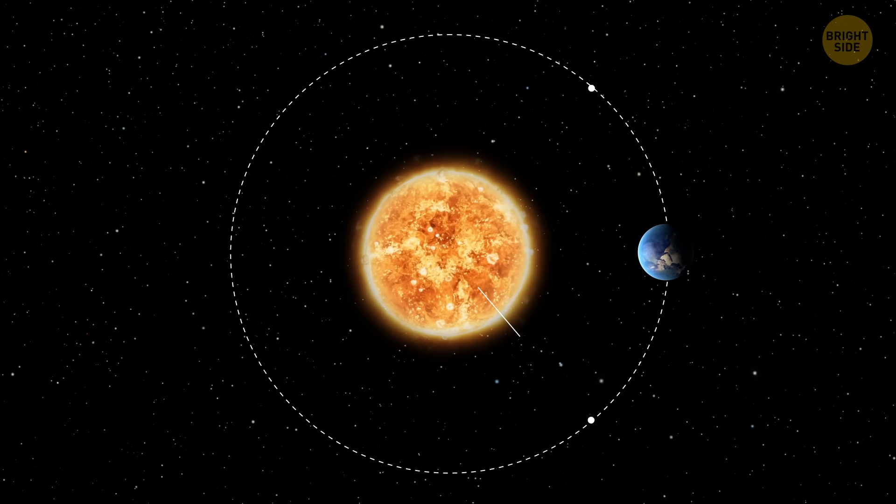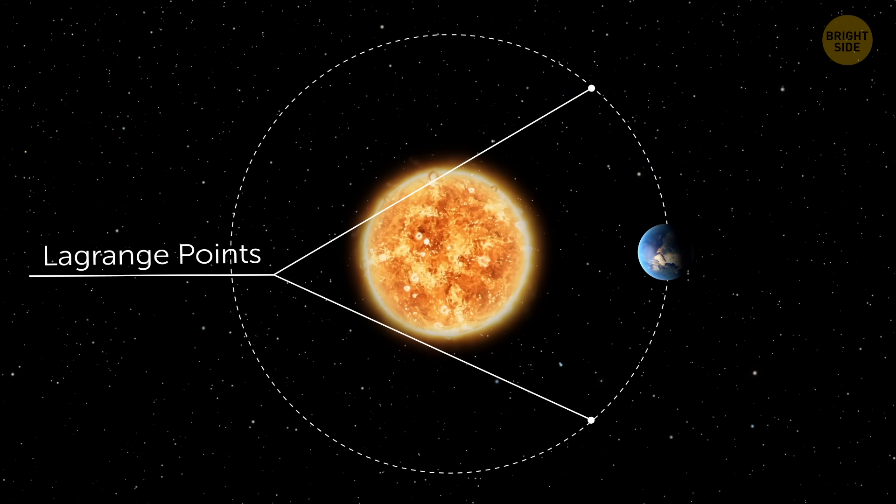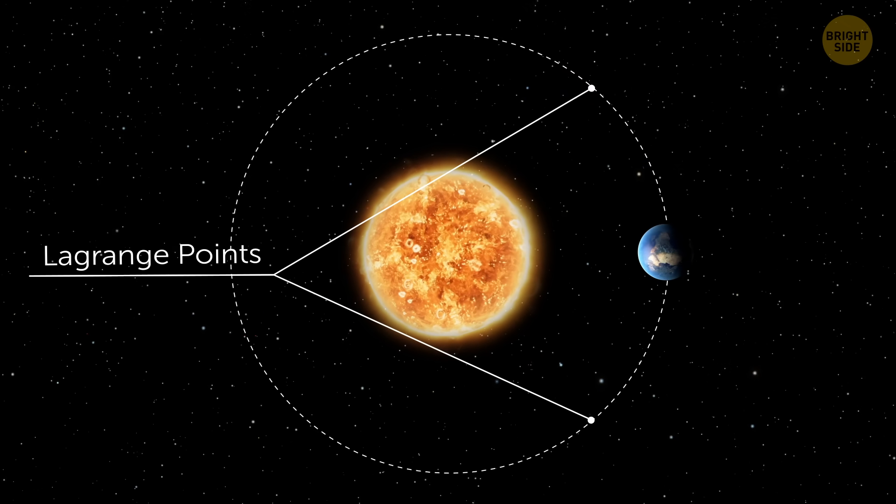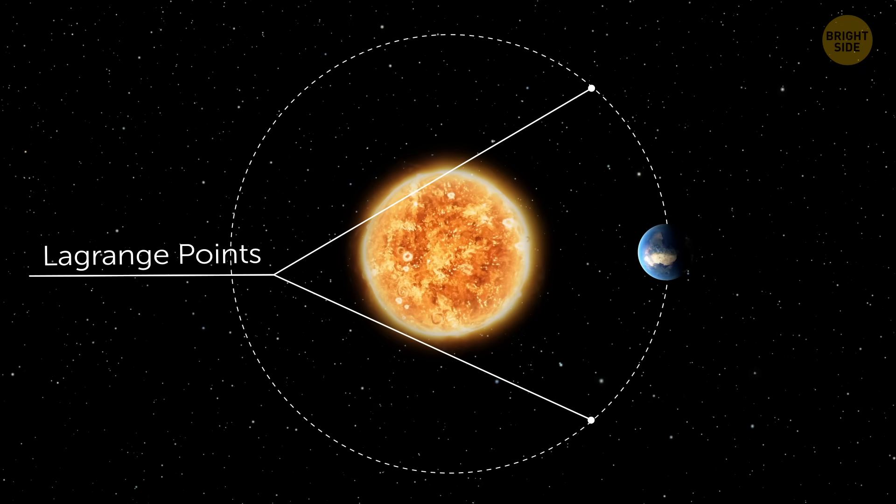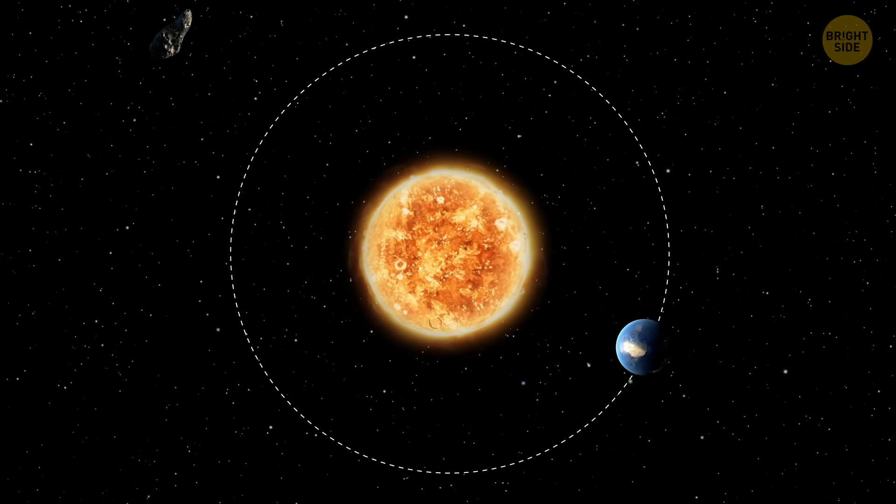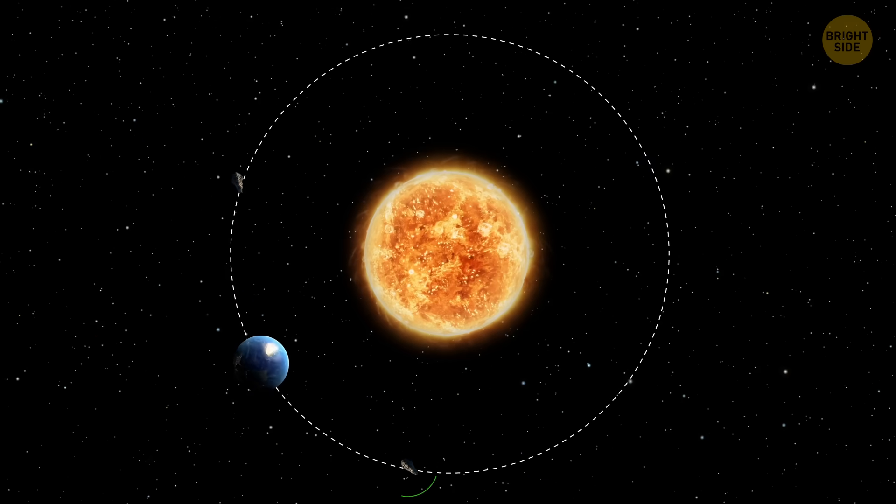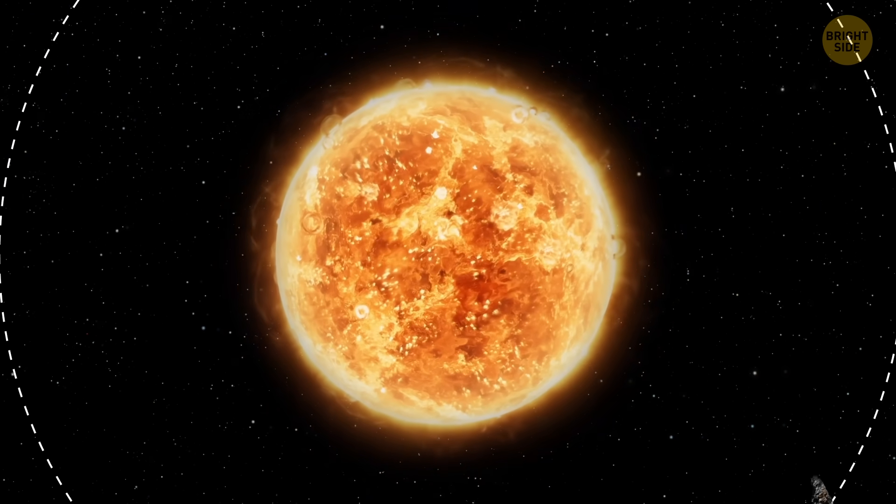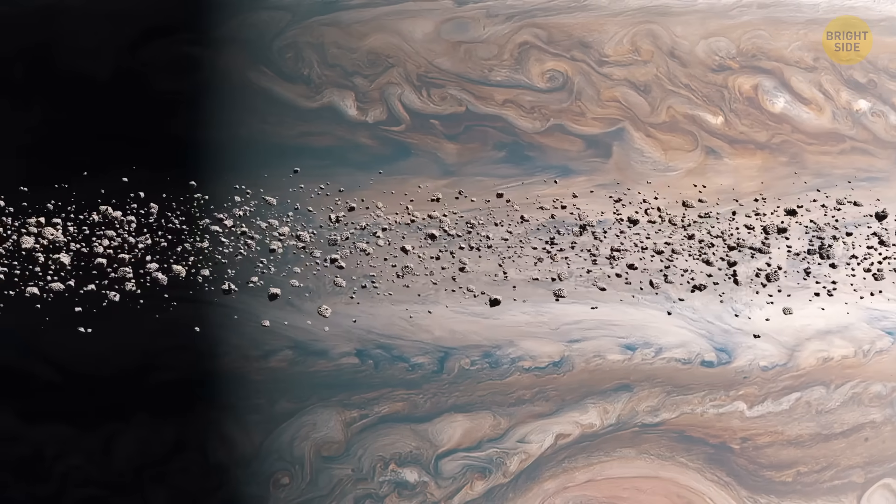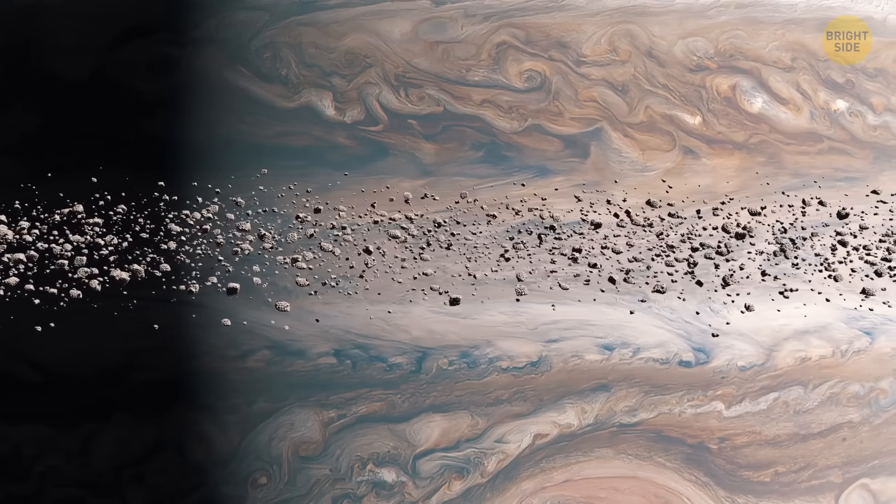Those spots are called Lagrange points, cozy hangout regions where the gravitational pulls from Earth and the Sun balance out perfectly. When they find themselves in one of those areas, they could be staying there for millions of years without drifting away. Jupiter, for example, has tons of these freeloaders. Earth has only a few.